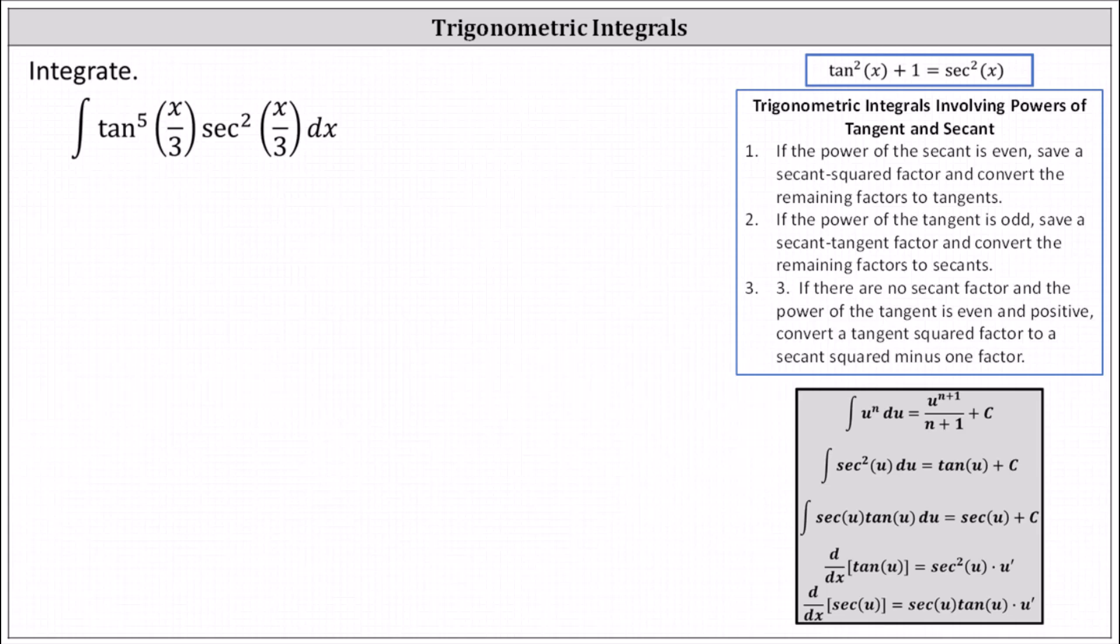On the right we have some notes. When the integrand function involves powers of tangent and secant, we shouldn't need these for this example. If we recognize the derivative of tangent equals secant squared, we should be able to recognize we can perform basic u substitution by letting u equal tangent of x divided by 3.